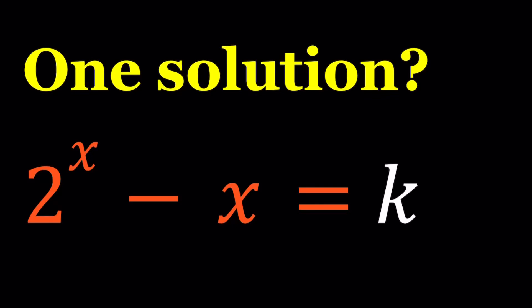Hello everyone. In this video, we're going to be solving a very interesting equation. First of all, we have something like 2 to the power x minus x equals k, where k is an arbitrary constant, and we're looking for one solution. So for which values of k is this equation going to have a single solution?